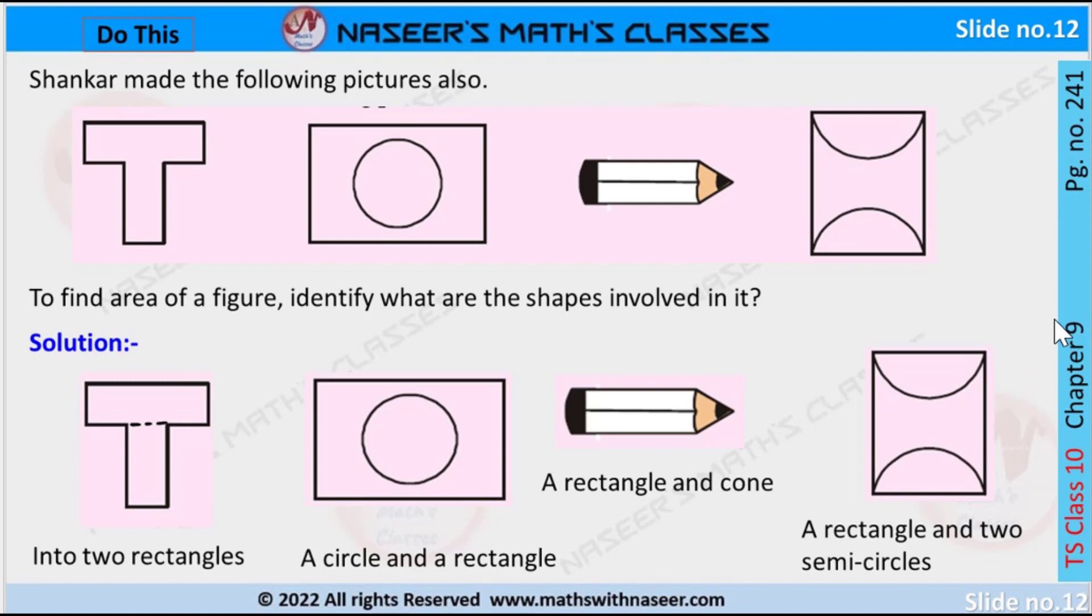Number 241, chapter 9. Shankar made the following pictures to find the area of the figure. Identify what are the shapes involved in it. These are the 2D figures. So this is the letter T. If we draw the line, it is divided into two rectangles.